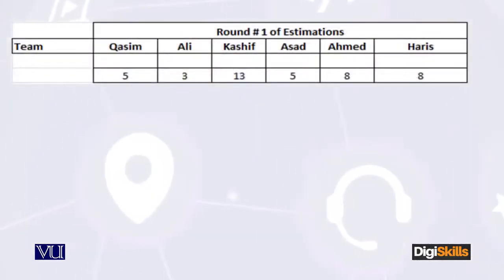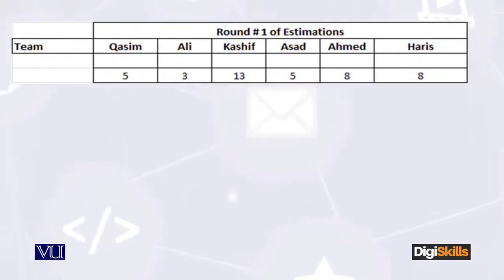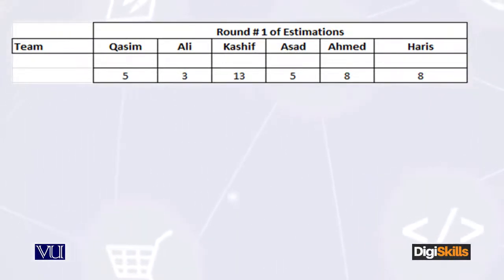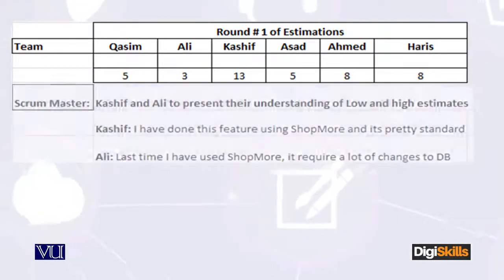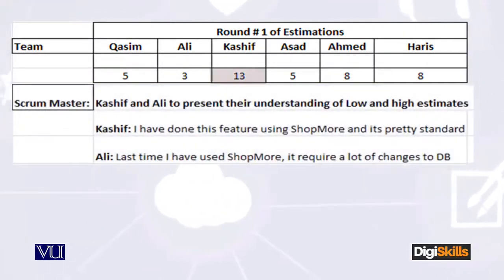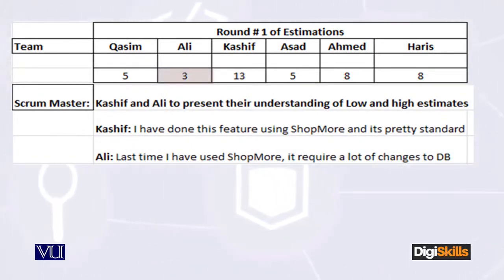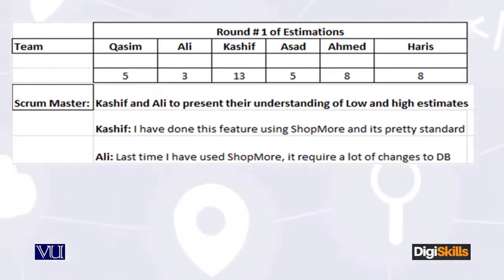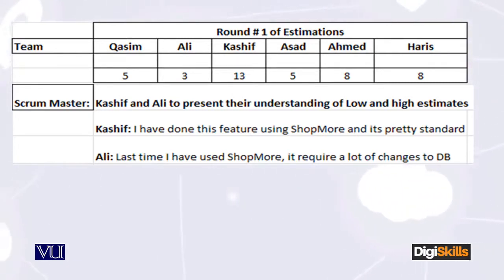For example, Kasim has estimated 5 story points, Ali has 3, Kashif has 13, Asad has 5, Ahmed has 8, and Haris has also given 8. This is the first round of estimation. The scrum master notices that Kashif has given 13 points and Ali has given 3 — the maximum and minimum. So the scrum master asks both to explain their reasoning.